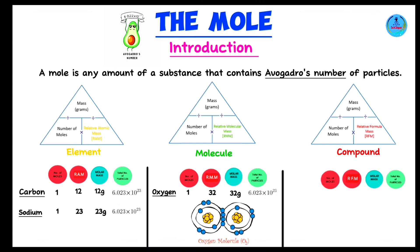Moving on to relative formula mass — I'll use two examples: sulfuric acid and sodium hydroxide. For sulfuric acid (H₂SO₄), we look at the formula: two hydrogen atoms, one sulfur atom, and four oxygen atoms. To get the RFM, we sum the relative atomic masses of each element. Hydrogen has a RAM of 1, and we have two: 1 × 2 = 2. Sulfur is 32. Oxygen has a RAM of 16, and we have four: 16 × 4 = 64. Summing these gives the RFM of sulfuric acid.